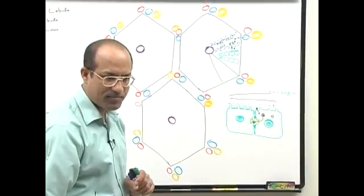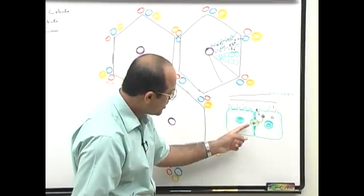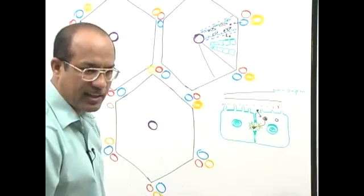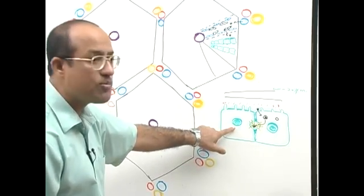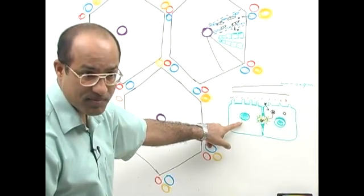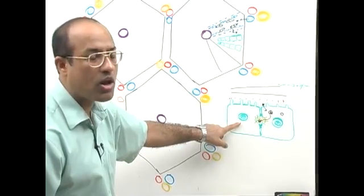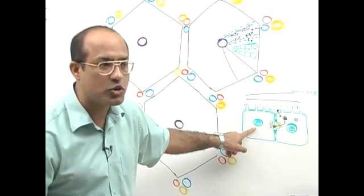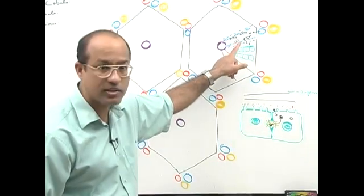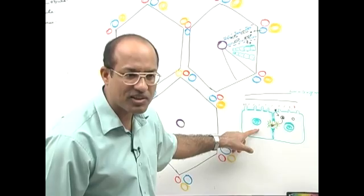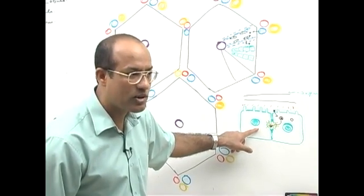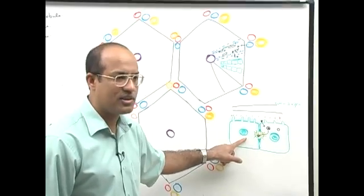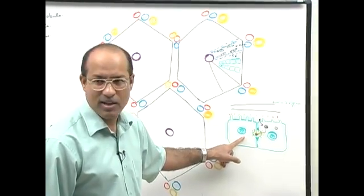Hepatocyte cells have a lot of mitochondria — 800 to 1000 mitochondria per cell. They have a lot of lysosomes and a lot of peroxisomes. They need to destroy any bacteria which may wrongly come from the GIT into the portal blood, and toxic substances coming from the GIT should be catabolized in hepatocytes. So they have lots of lysosomes, peroxisomes, and also lots of rough endoplasmic reticulum and smooth endoplasmic reticulum.